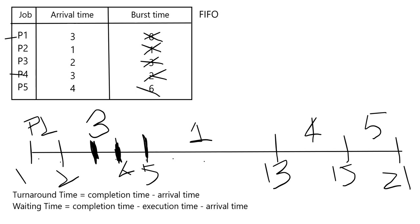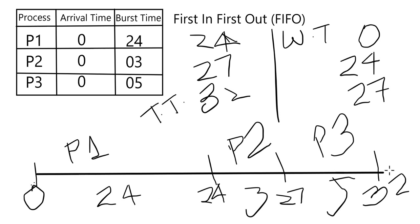This is the final Gantt chart. Notice the key limitation of FIFO: process 3 required only 5 units of CPU time but had to wait 27 units before it even started executing. This is why FIFO can lead to starvation — processes that arrive later may wait a very long time because processes that arrived first and have long burst times monopolize the CPU.